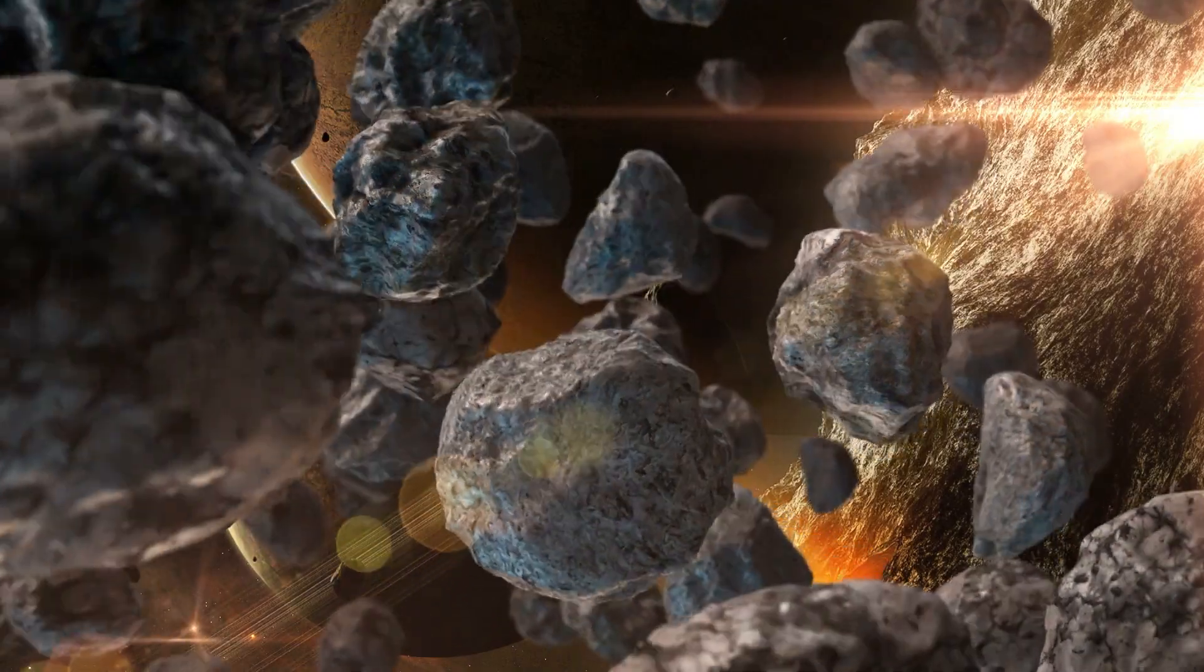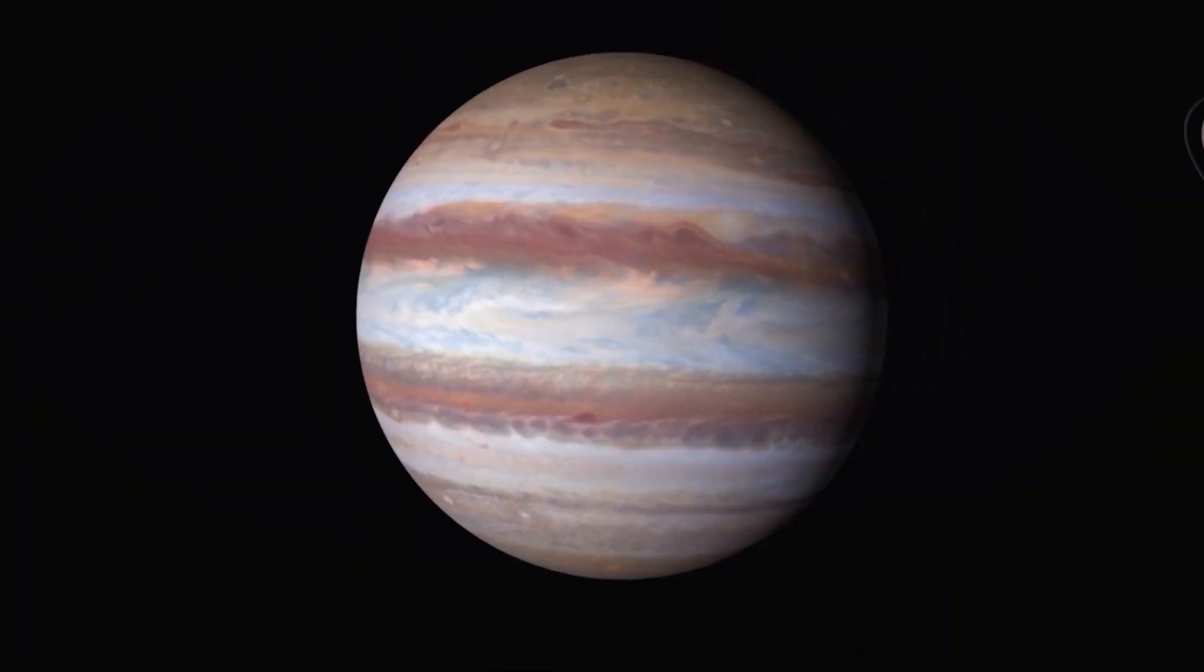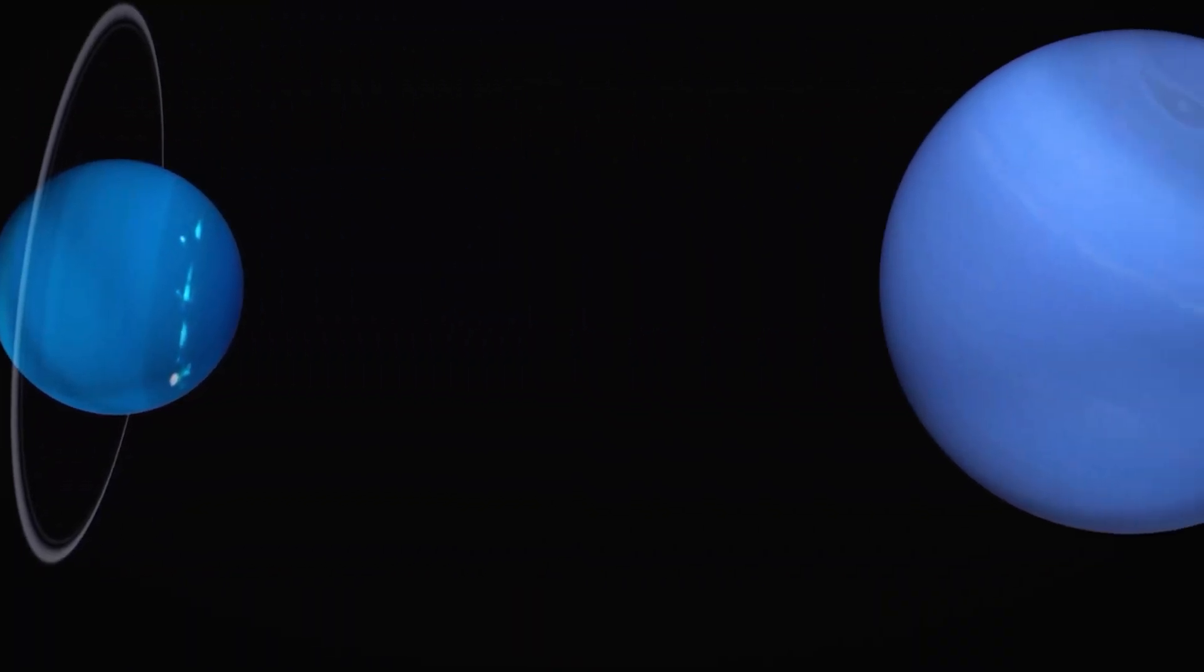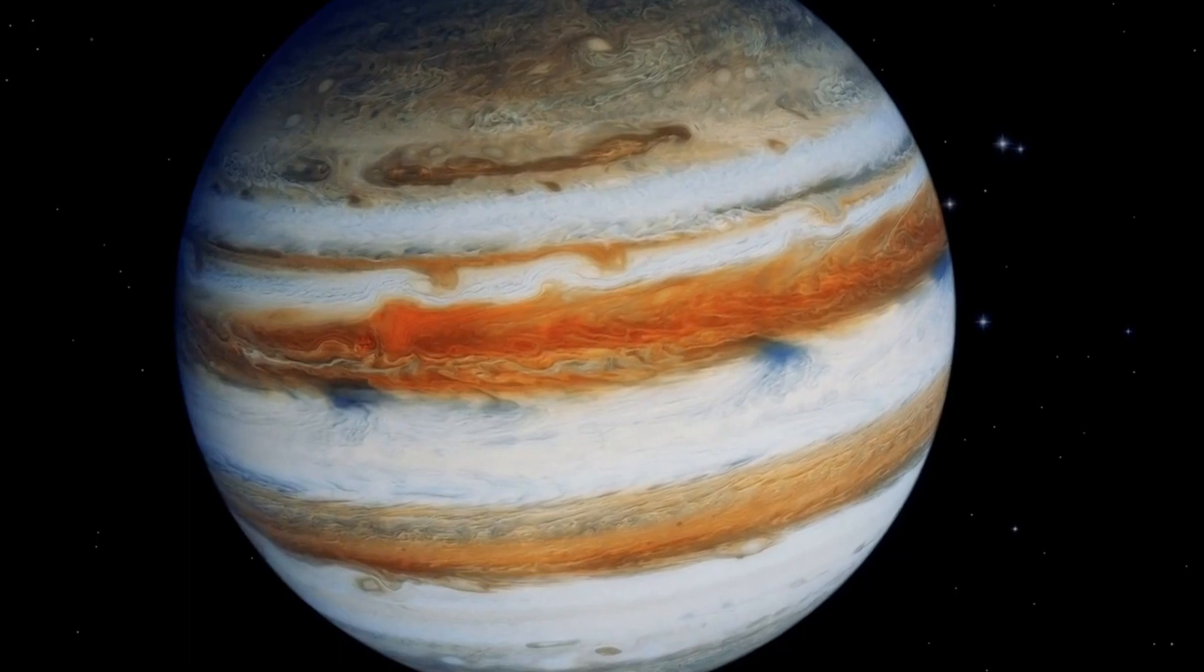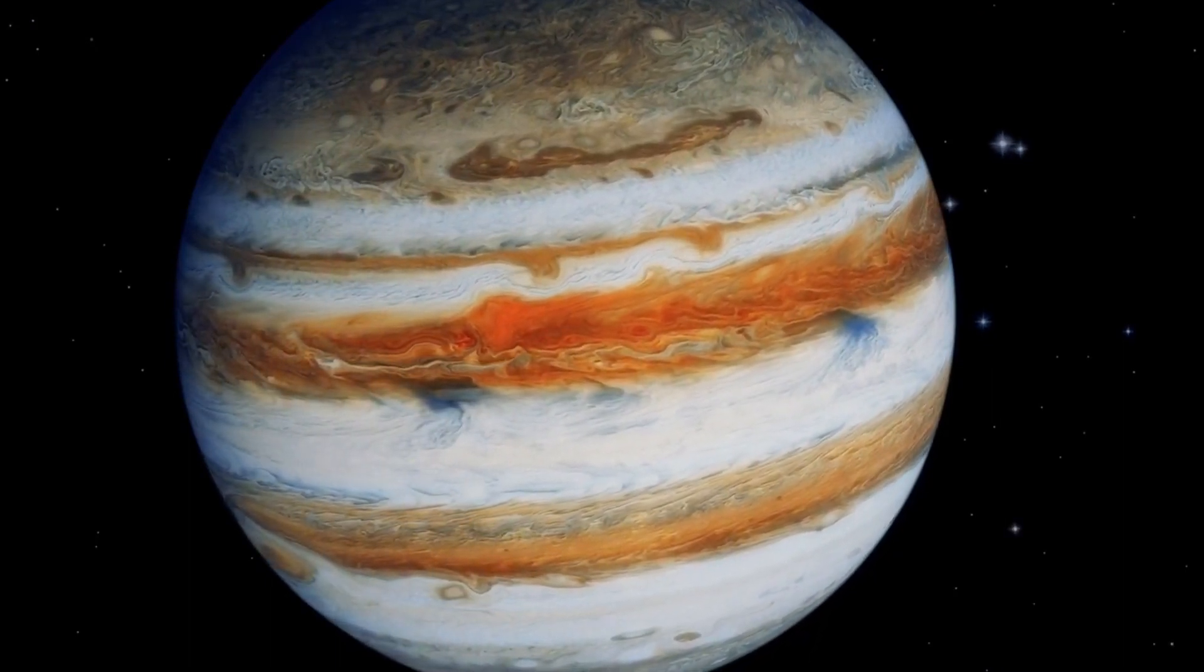The big issue the belts face is that they are too close to two of the gas giants: Jupiter and Neptune. Due to the size of Jupiter, its gravity is very strong, which causes a tugging effect on the asteroids within the belt.